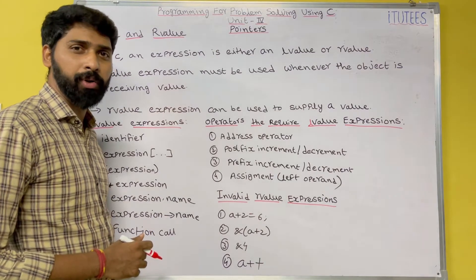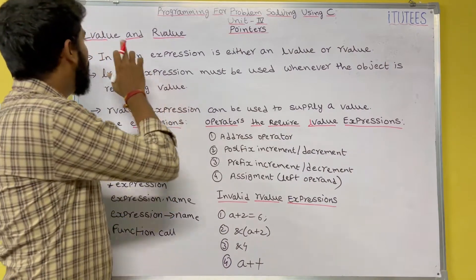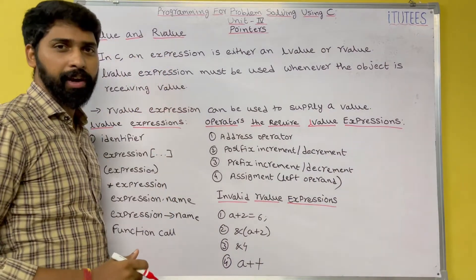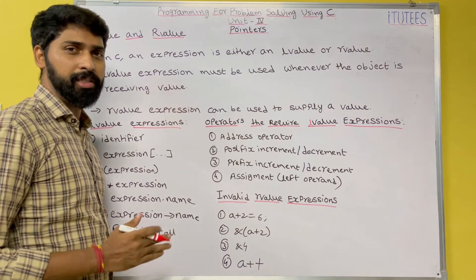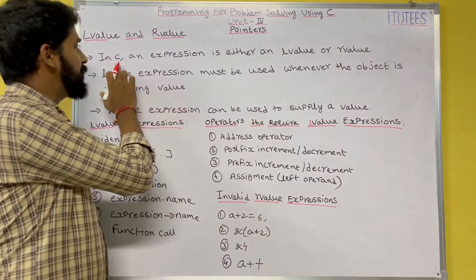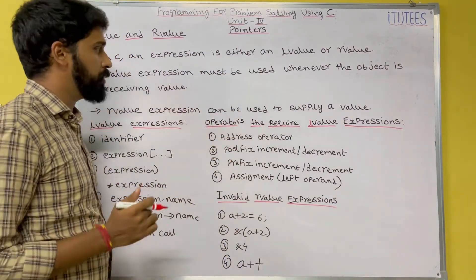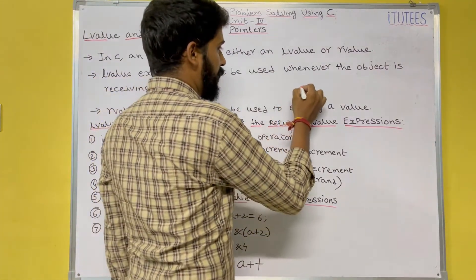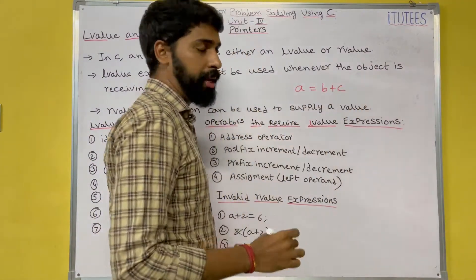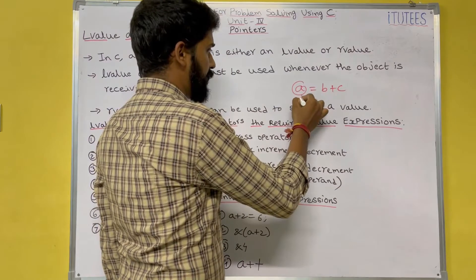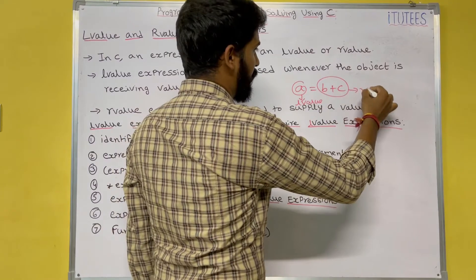Hello friends, welcome to C programming tutorials. In this class we are going to learn about l-value and r-value. L-value means left value, r-value means right value. In C, an expression is either an l-value or r-value. For example, in 'a = b + c', 'a' is the l-value and 'b + c' is the r-value.